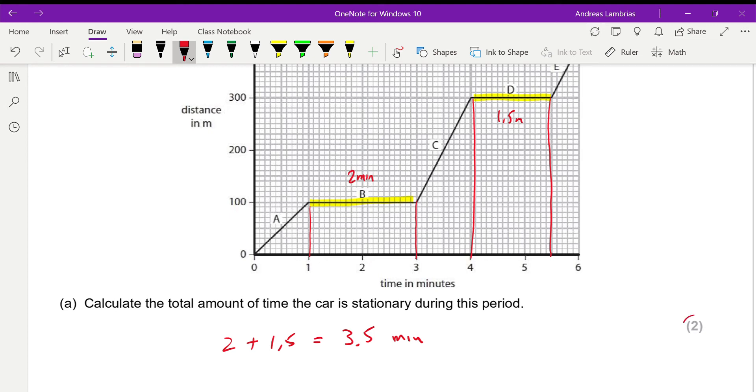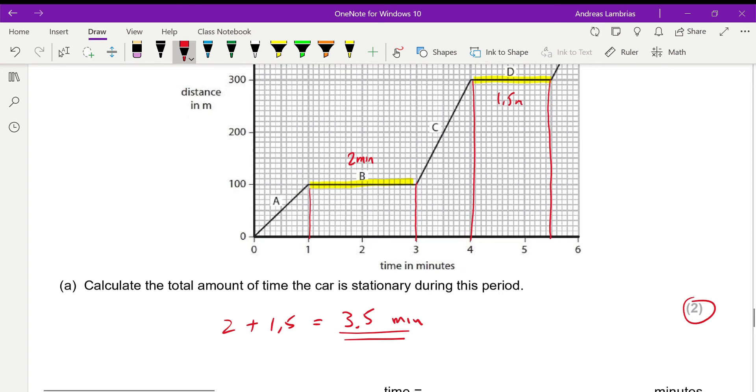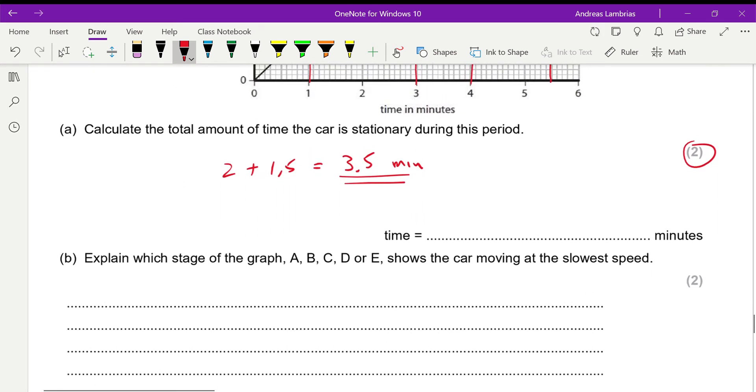Two and one point five, therefore the total will be three point five minutes. This is a two point mark, so finding the answer will just give you one point. The second point goes by showing how did you find these numbers on the graph.